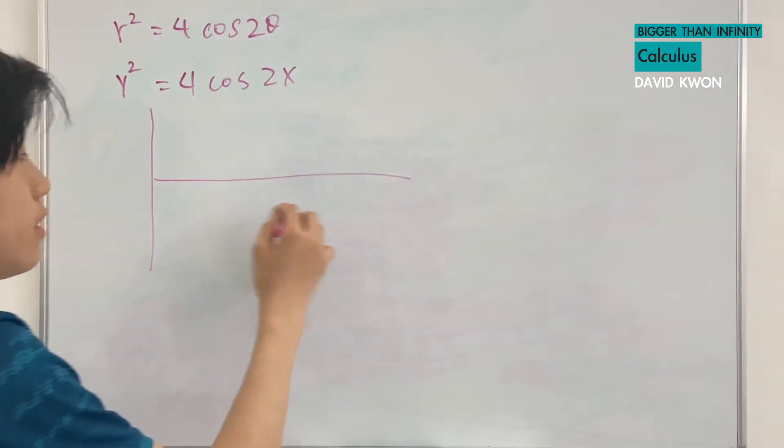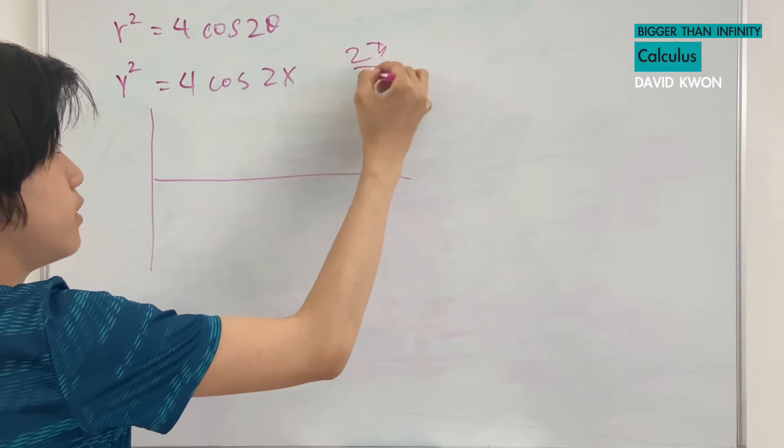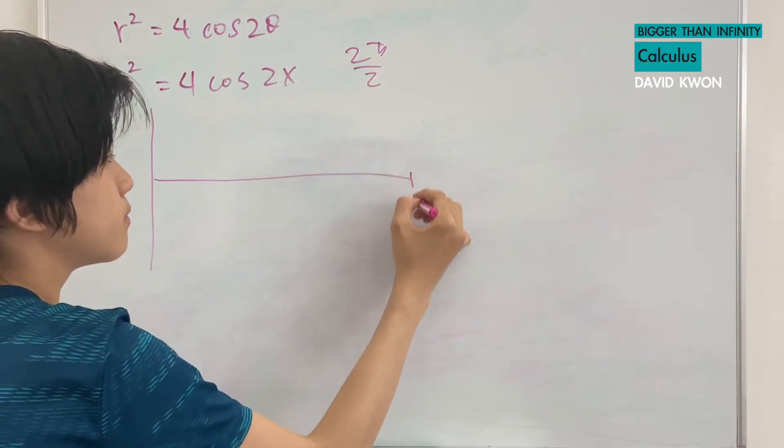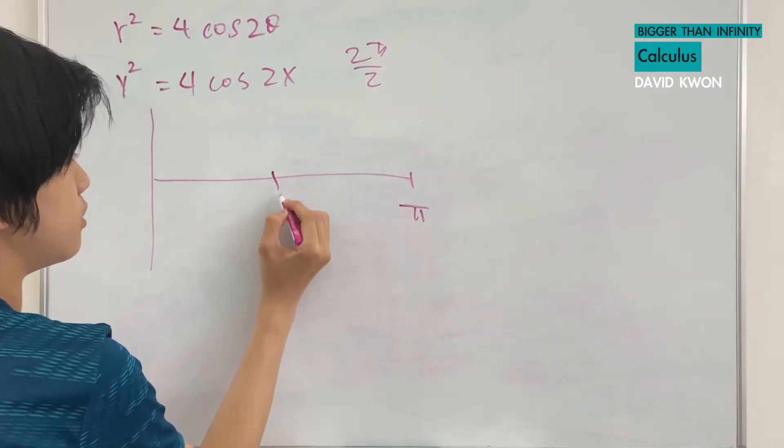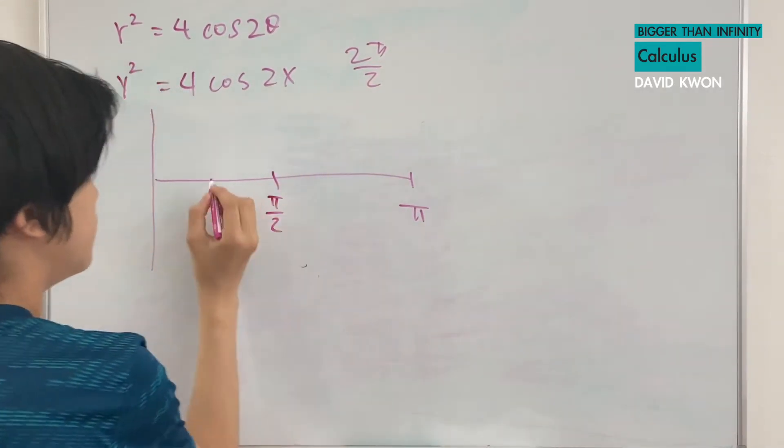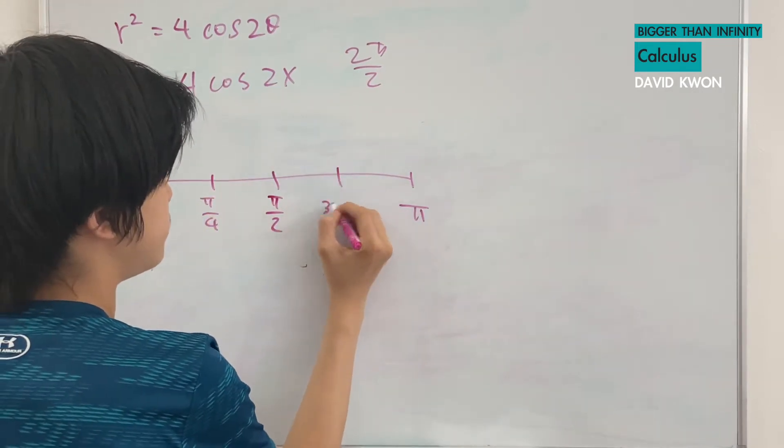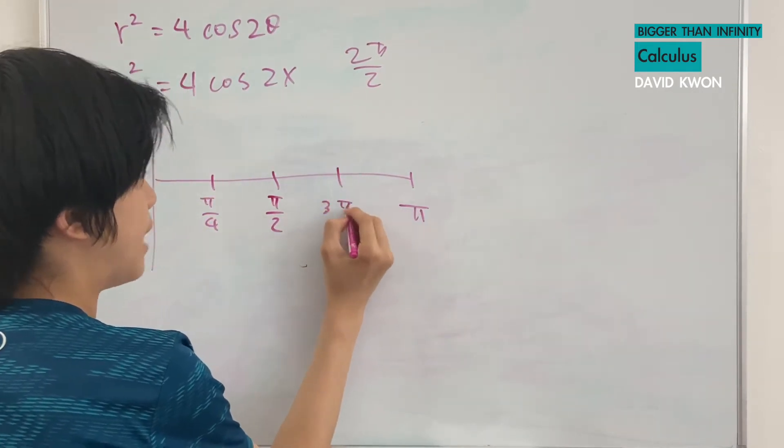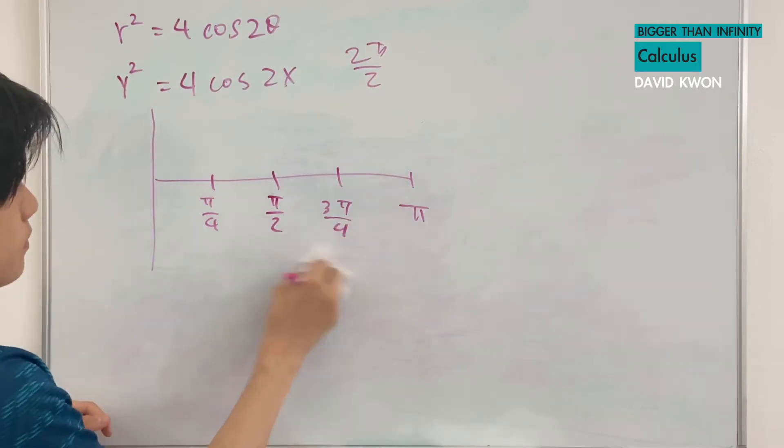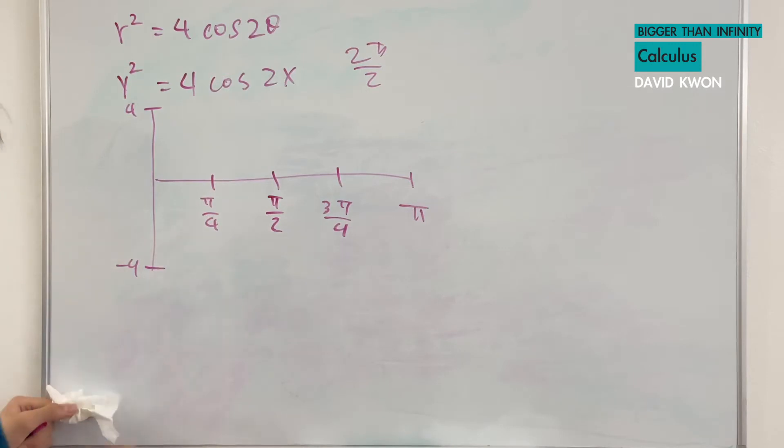The period where the graph repeats is usually 2π, but there's a 2, so I divide it by 2, getting π. So this is going to be π over 2. This is π over 2, and this is π over 4, and this is 3π over 4. And let this be 4, and then let this be negative 4.